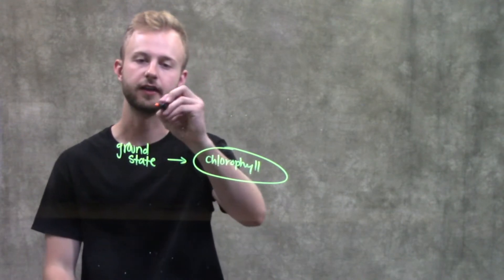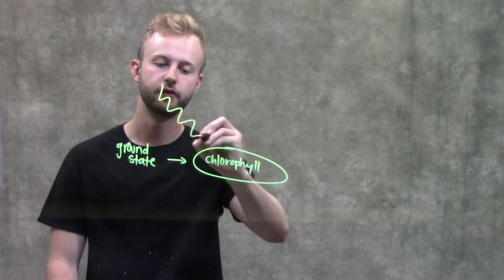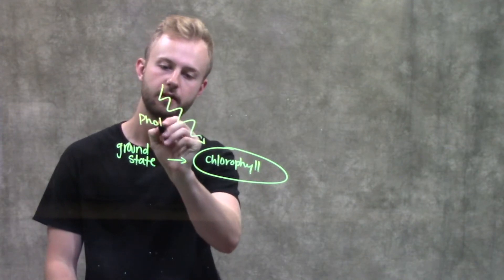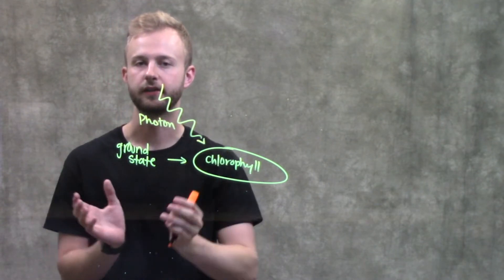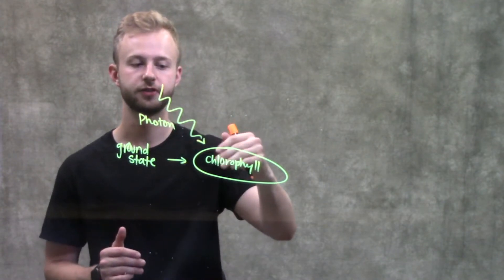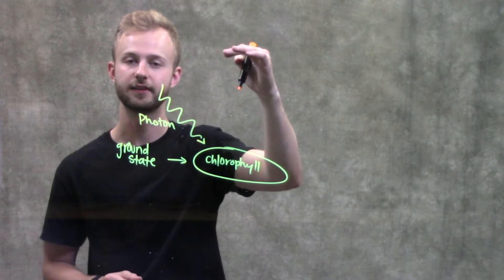What that will look like is we'll have a photon of light come in. And with this photon, it needs to be exactly equal to the difference in energy between the ground state and the excited state of the electrons.